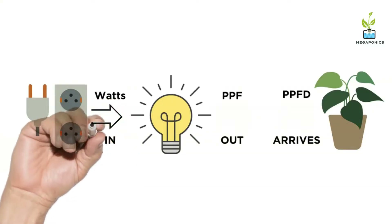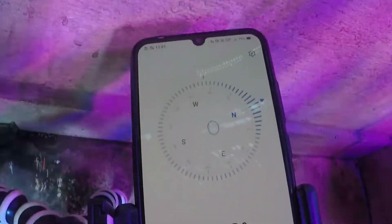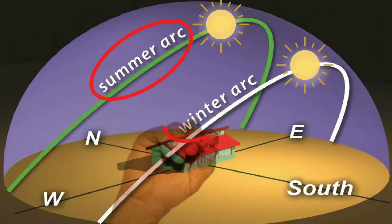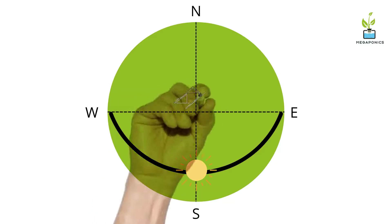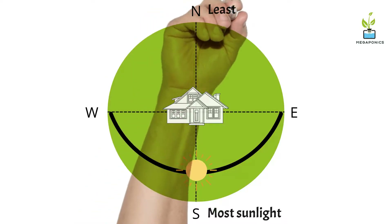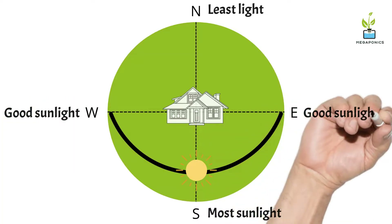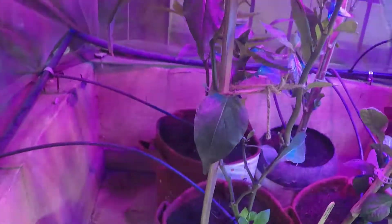Whether you need grow lights depends on the direction of your balcony, window, or growing space, because the amount of sunlight depends on the sun's path based on seasons and hemisphere. For growers in India, which lies in the northern hemisphere, south-facing windows or balconies will have the most direct sunlight, while north-facing windows provide very little. The opposite applies for the southern hemisphere, so check the direction of your balcony with a compass.